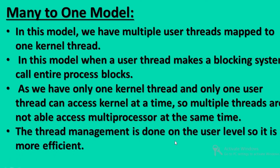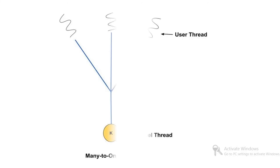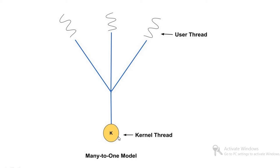Thread management is done at the user level, so it is more efficient. In the diagram, there are many user-level threads — one, two, three — and they are all mapped to one kernel-level thread. This is what we call the many-to-one model.